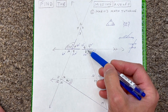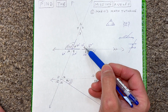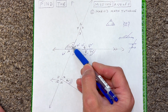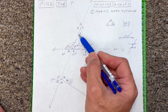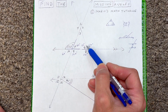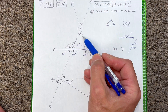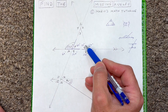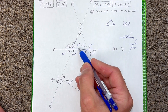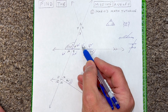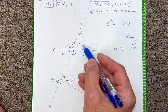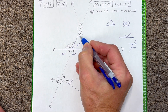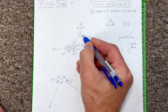Now look at what we have — we've got a triangle with angle 3, angle 6, and angle 5. All angles in a triangle add up to 180 degrees. So 60 plus 70 is 130, and 180 minus 130 gives us 50 degrees — that tells us angle 3 up here is 50 degrees.